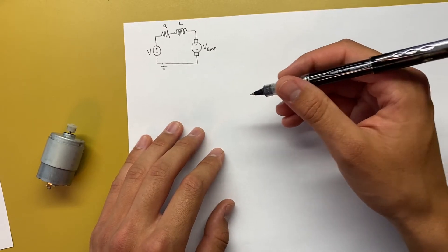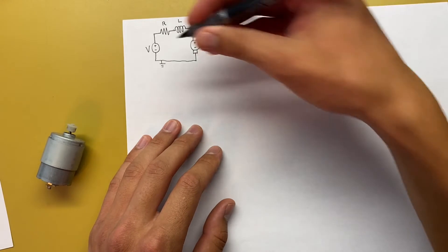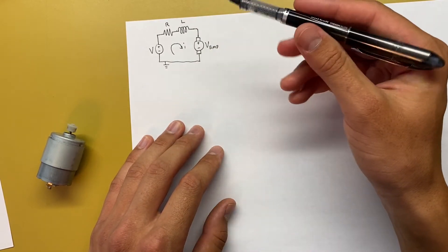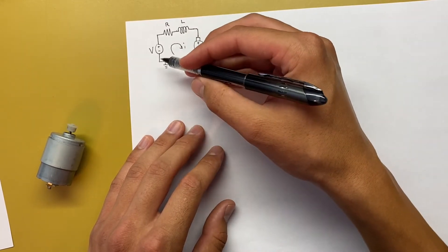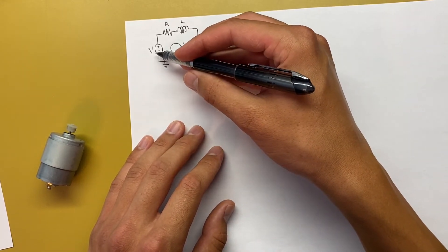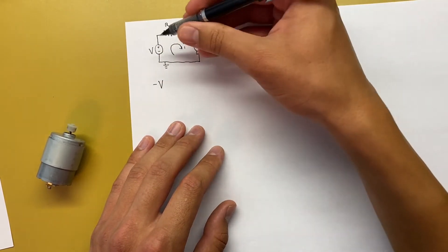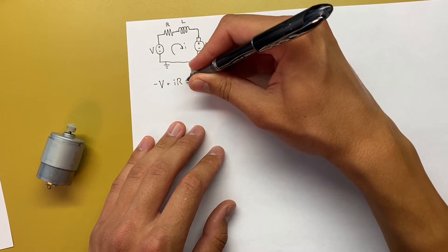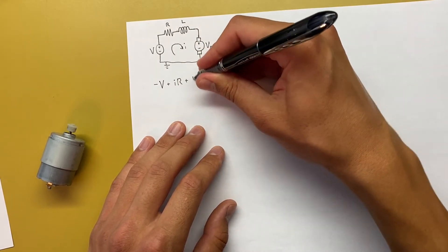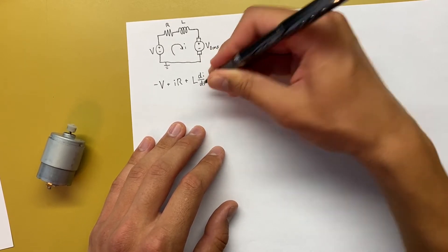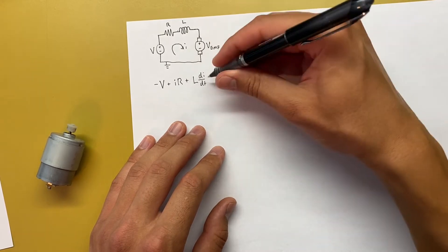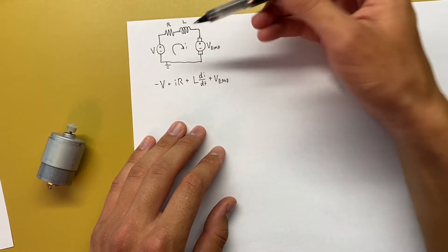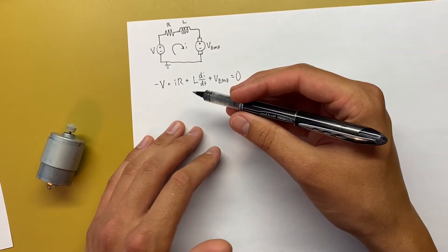Now we can use Kirchhoff's voltage law to figure out what the equation for the circuit is. So we can define our current going around this way, I, and then we'll just go around and use the passive sign convention to figure out what the equation here is. So starting from here, we see the negative sign first on the voltage source, so we'll go negative V plus the voltage across the resistor is IR, so IR plus the voltage across an inductor is L dI/dt. And then we're seeing the positive end of this voltage source, so plus VEMF. And Kirchhoff's voltage law tells us that the sum of all the voltages in a loop is equal to zero. And that's it for the electronic side of this.